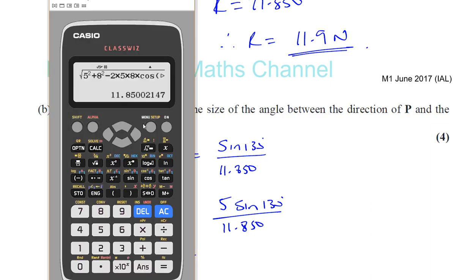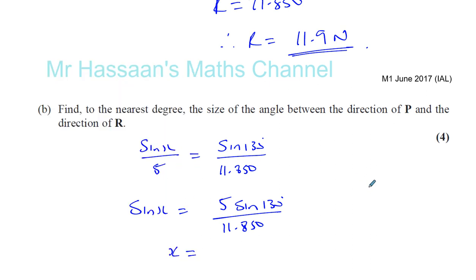So we take 5 times sine 130 divided by our answer. 5 sine 130 divided by our answer, and then we're going to press inverse sine of that, and that will give us our answer, hopefully, 18.85 to the nearest degree. So 18.85, so the angle we need is equal to 18.9 degrees. Sorry, to the nearest degree that's 19, isn't it? That's 19 degrees as required to the nearest degree.